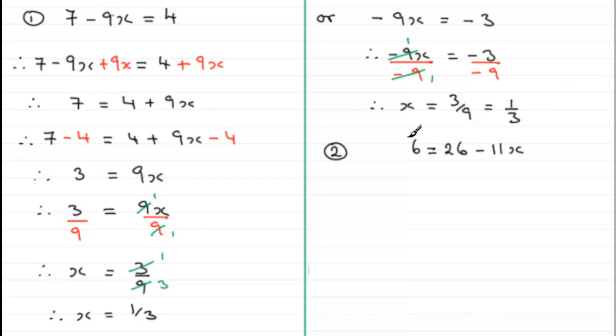Now in number 2, we've got 6 equals 26 minus 11x. With this example, I chose this just to put my negative x term on the right hand side of the equation. So with this one, what I'm going to do is I'm going to add 11x to both sides and I won't put in all of the stages. I'm just going to go ahead and add 11x to both sides. So what we've got here is 6 plus 11x then equals, and then we've got 26, purely because minus 11x plus 11x would go to 0.